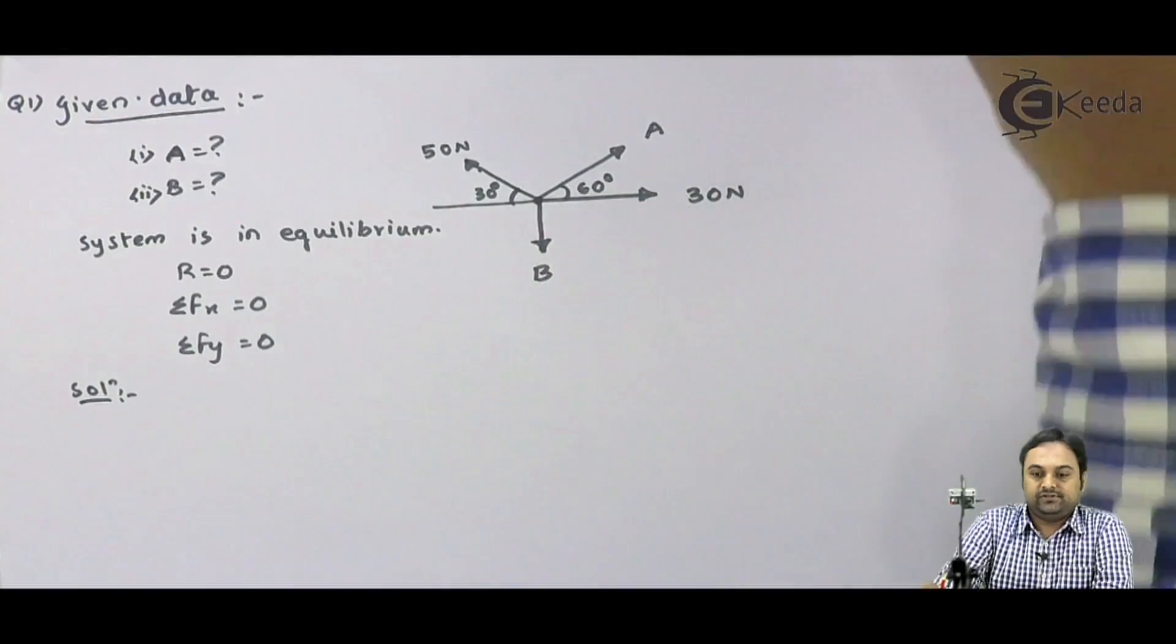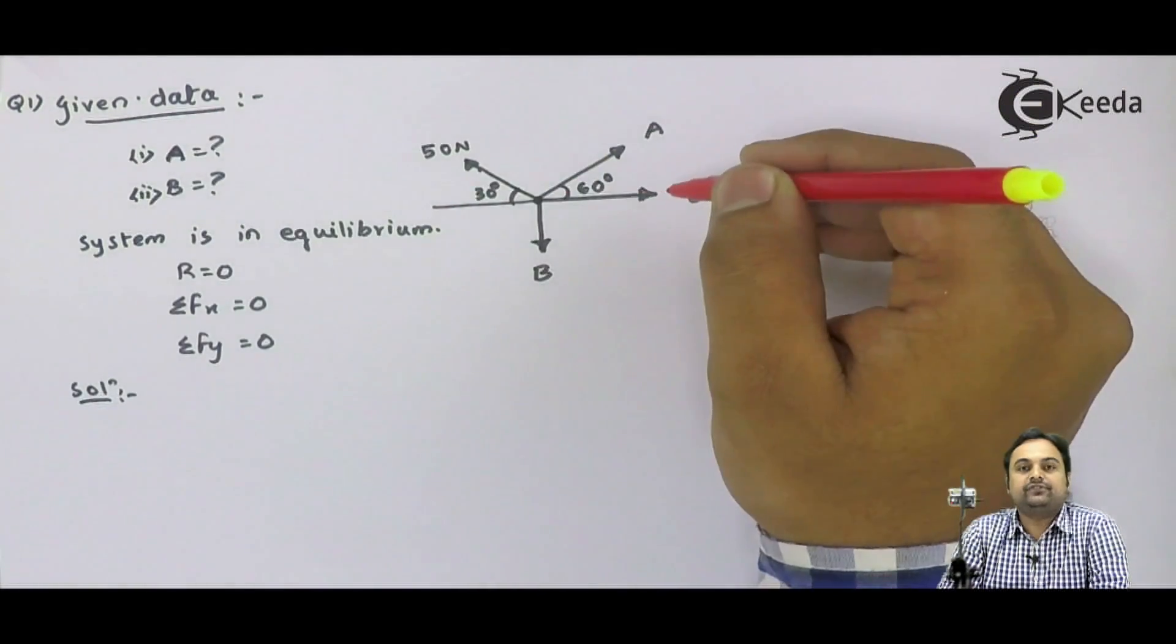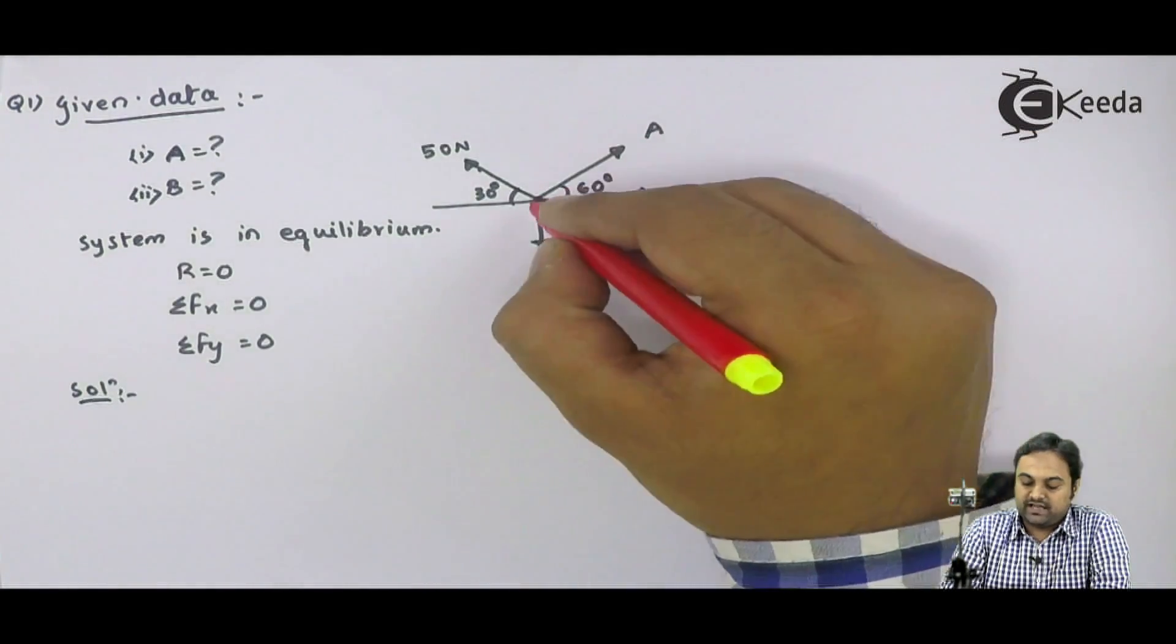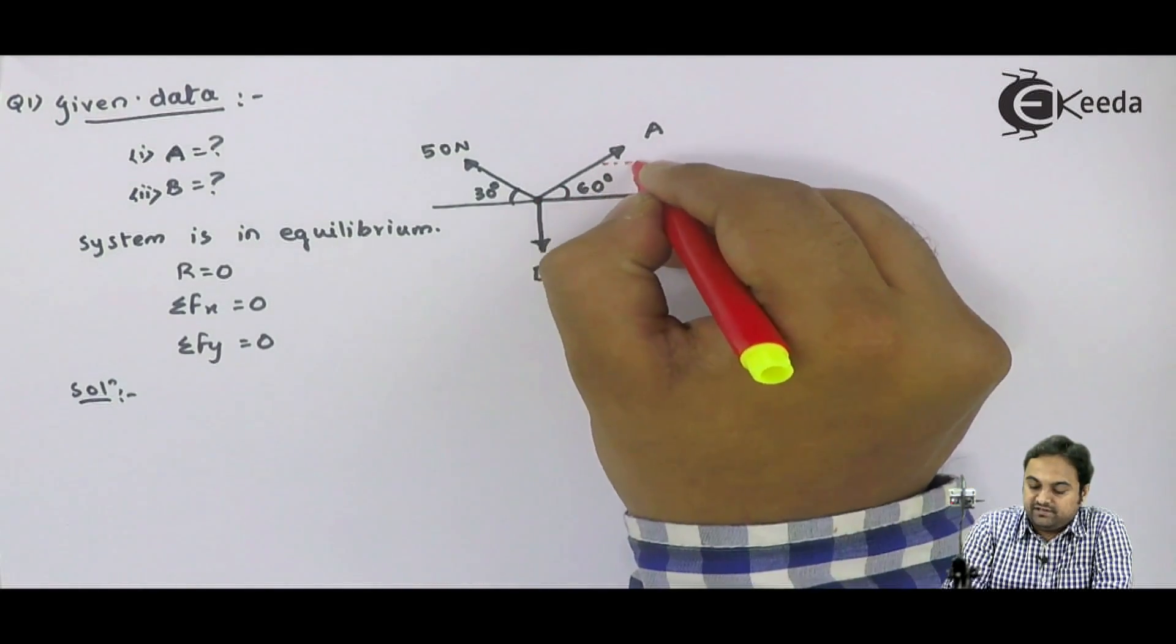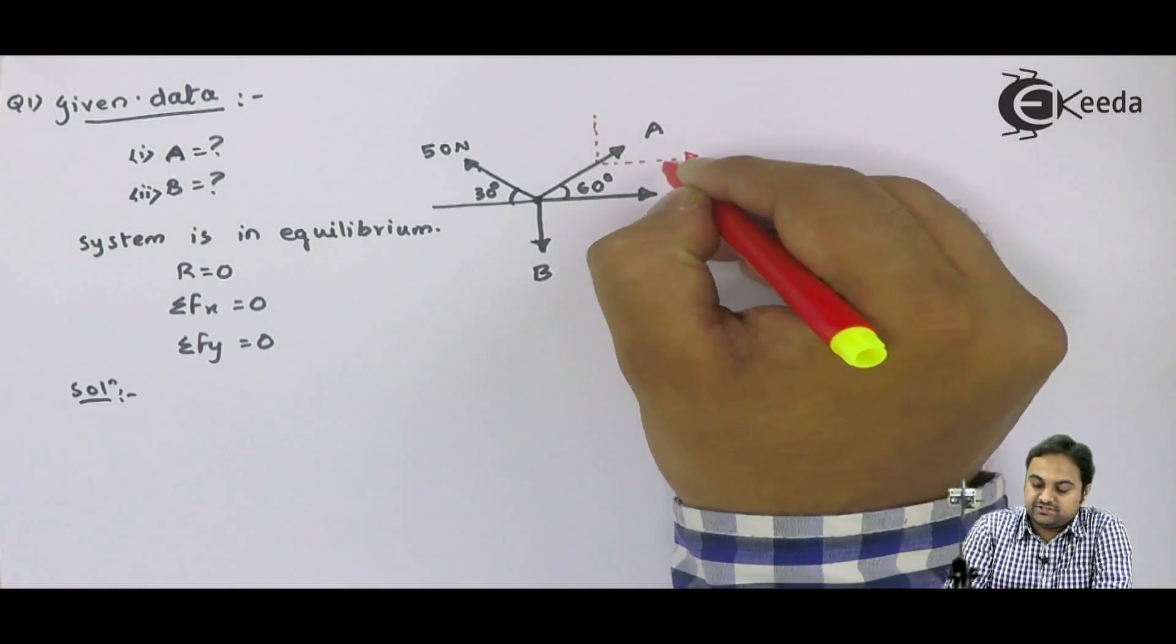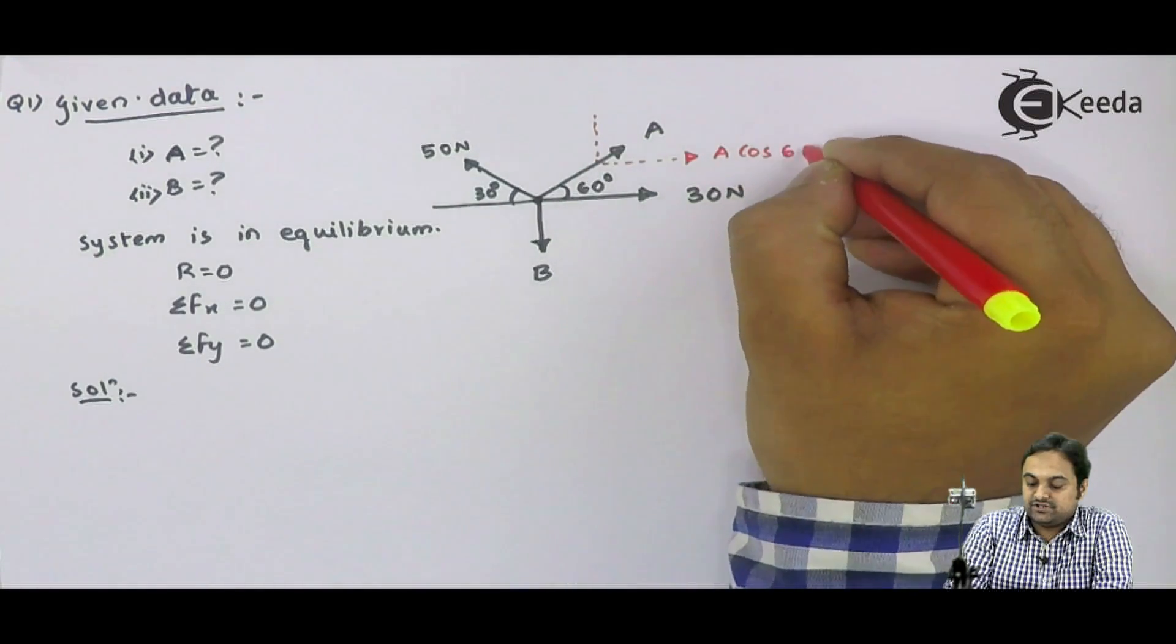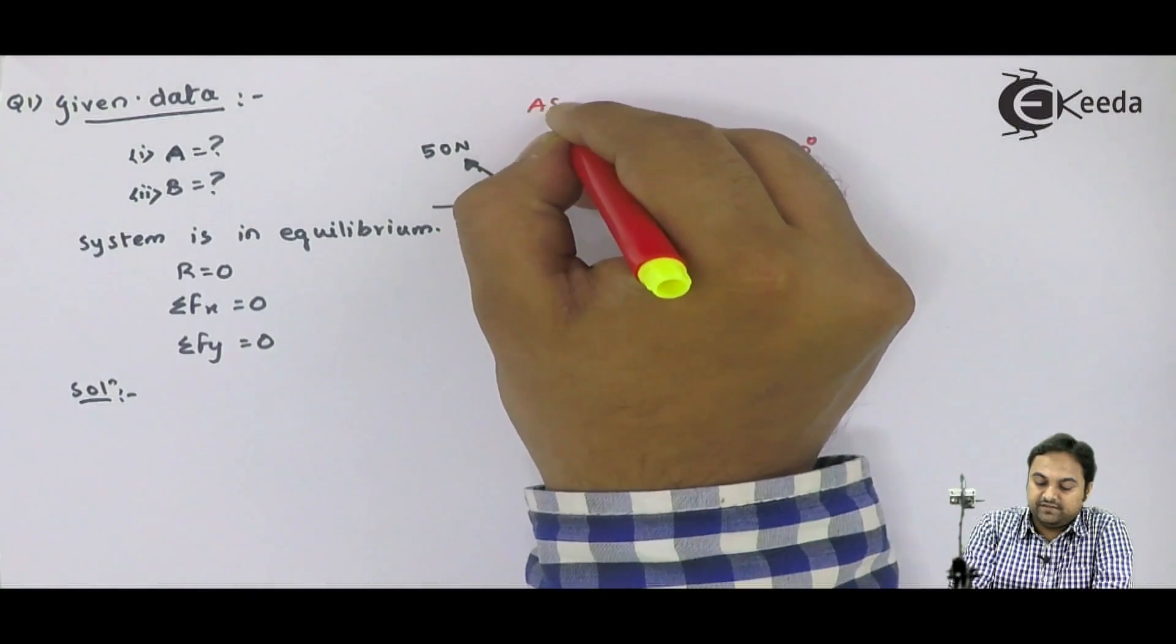Since we know that if we have any inclined force, that force needs to be resolved. Here, if we look in this diagram, the force A is inclined at 60 degree with horizontal. So I will have two components of A: the horizontal component will be A cos 60 degree and vertical will be A sin 60 degree.